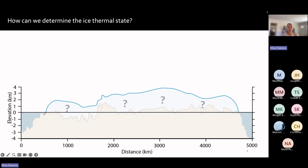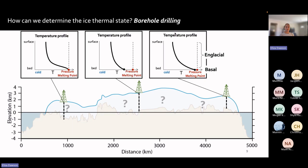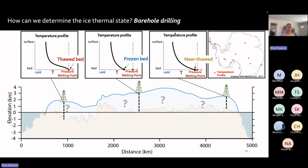How can you determine the thermal state of an ice sheet? One way is to drill through the ice sheet and collect temperature profiles. Here are three examples: in all cases the temperature profile increases with depth, but the basal temperature differs. In the left profile the temperature is at the pressure melting point — the warmest possible before turning to liquid water. The middle profile has a basal temperature well below this, meaning it is very frozen. The right example is near-thawed, just below the melting point. However, the borehole data coverage across Antarctica is extremely sparse because it is difficult to get drill equipment to remote locations, it is expensive, and weather windows are very short.